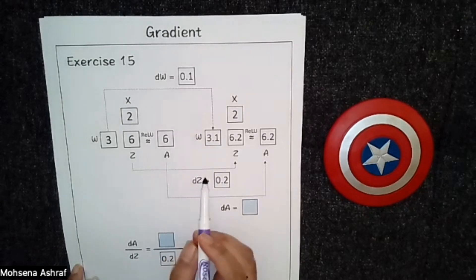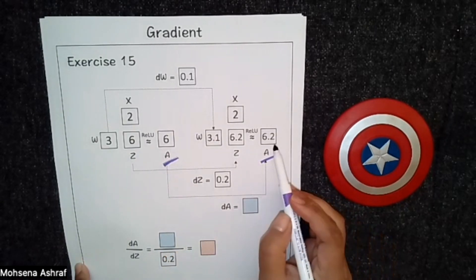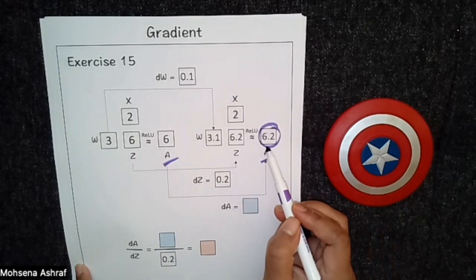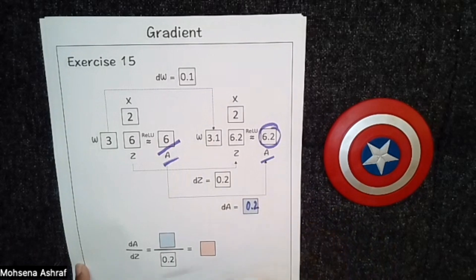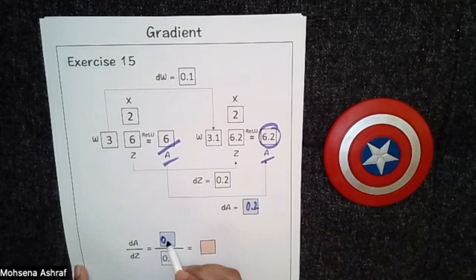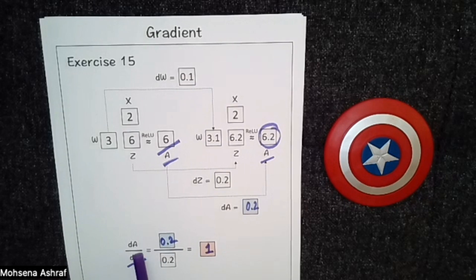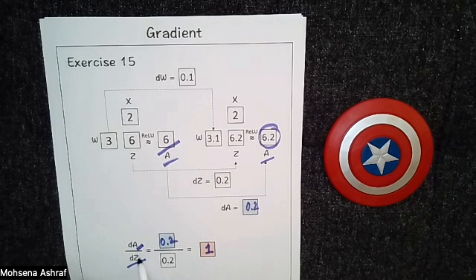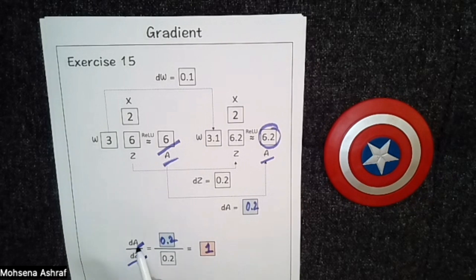Now we have to again find out the change in variable a, which is da. In the second step the value of a is 6.2, and in the previous step the value of a is 6. So da = 0.2. If we put da = 0.2, then da/dz gives us simply 1. This da/dz = 1 means that variable a is increasing at a constant rate of 1 unit per unit of z.